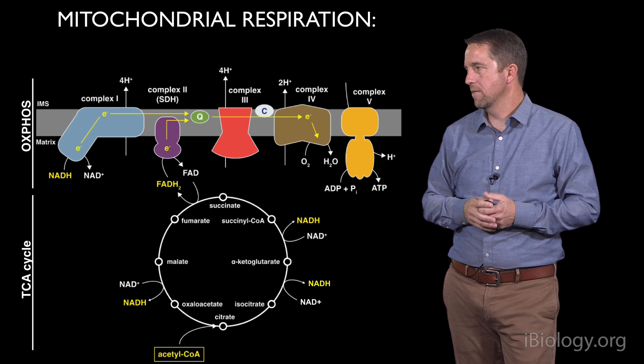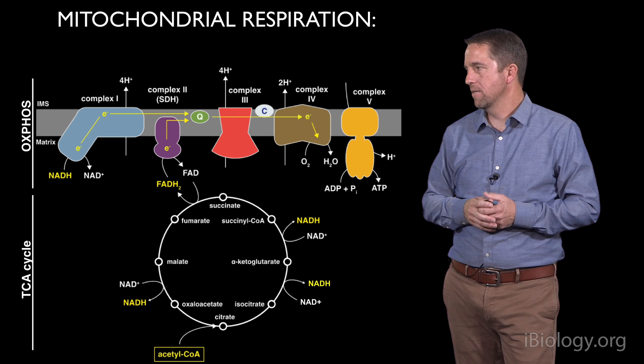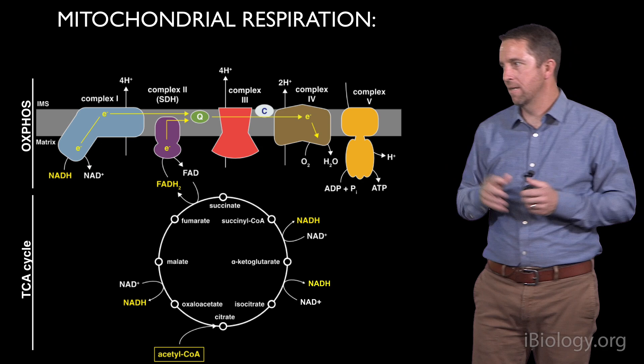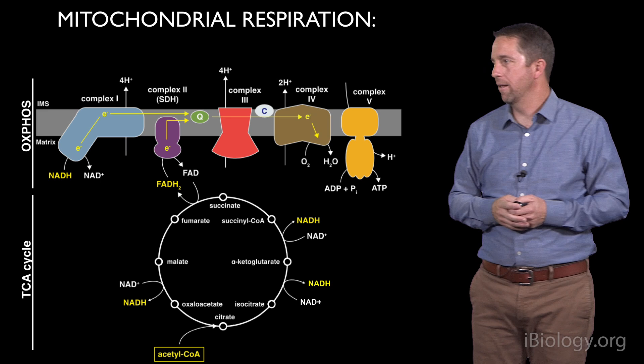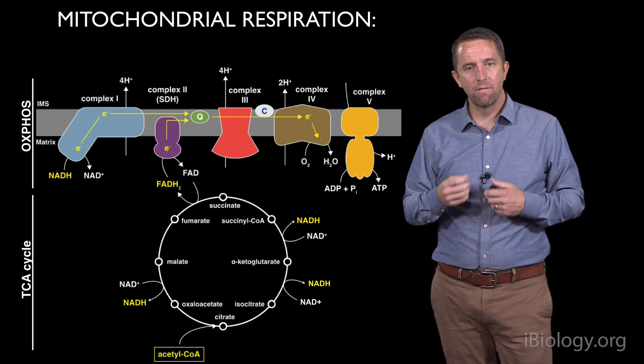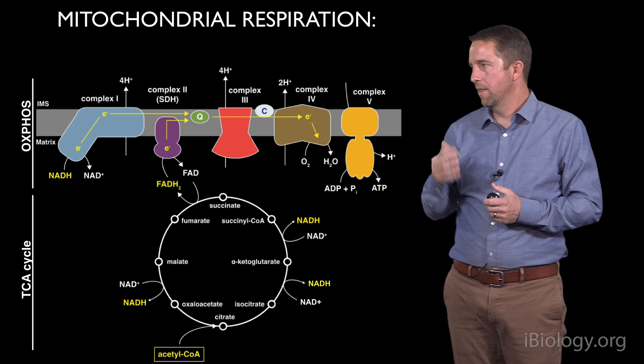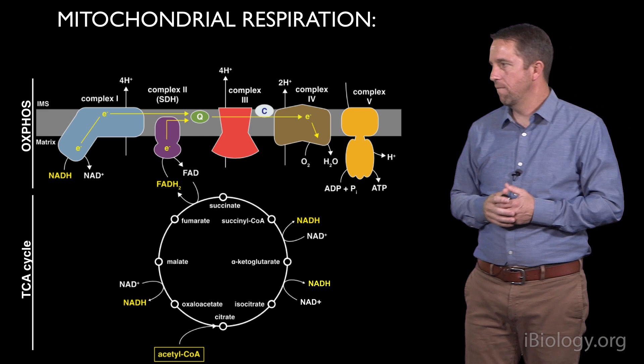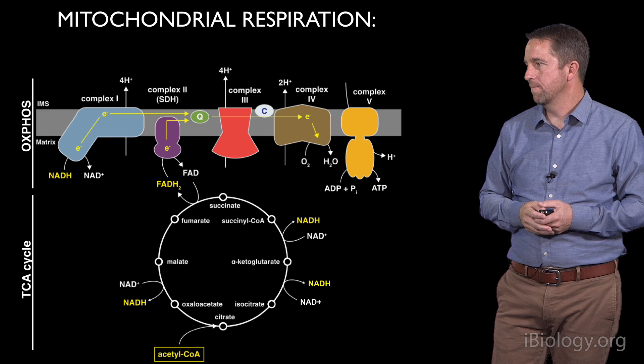I talked about this in much more detail in the first part. I want to point this out because this is a really elegant and very important process — I think one of the most elegant processes that occurs in biology. This very complex system extracts energy from food and conveys that energy through a series of steps that eventually enable that energy to be used to make that phosphodiester bond, to make ATP from ADP and phosphate.